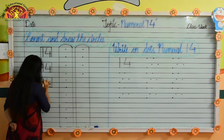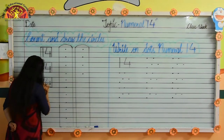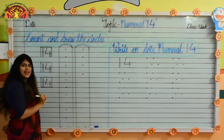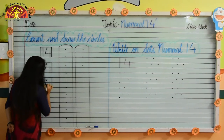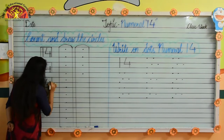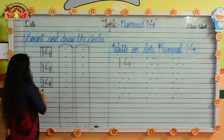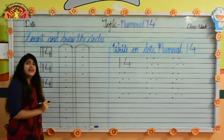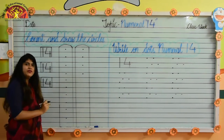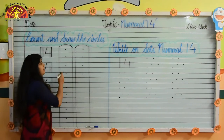Now do it again. Make standing line, hold your crayon tightly, don't make zigzag line. Then make slanting line, then make slanting line, like this, then sleeping line, now make standing line. Tell me kids, which numeral is this? 14.